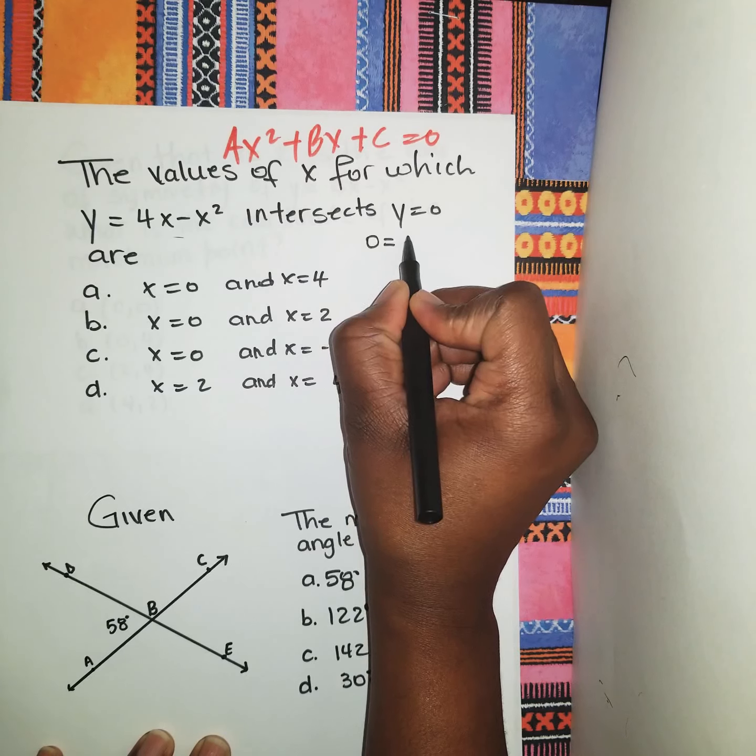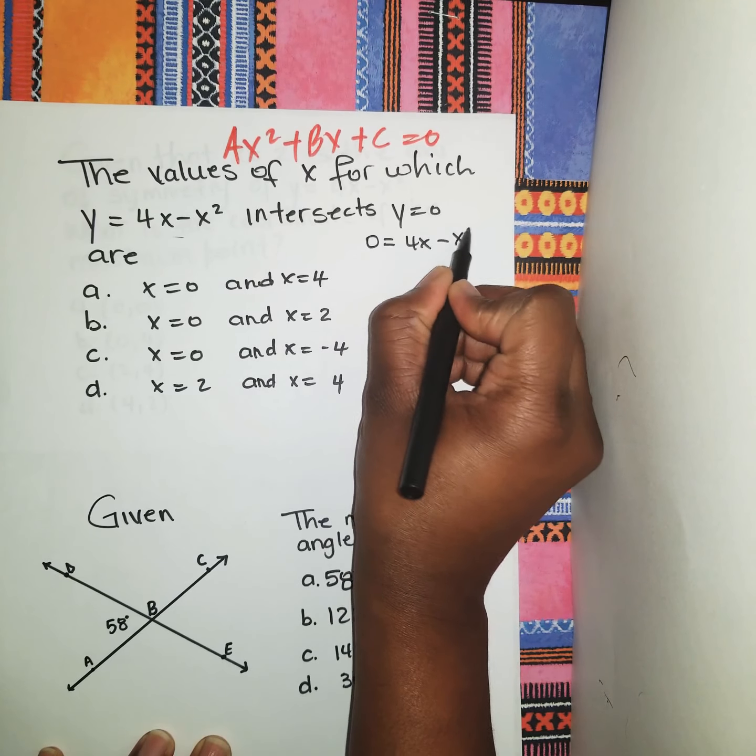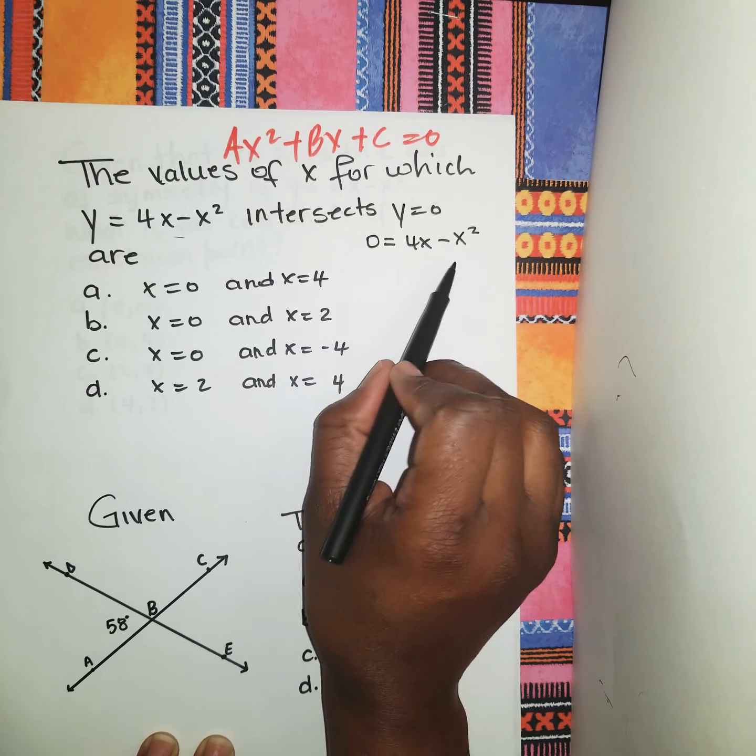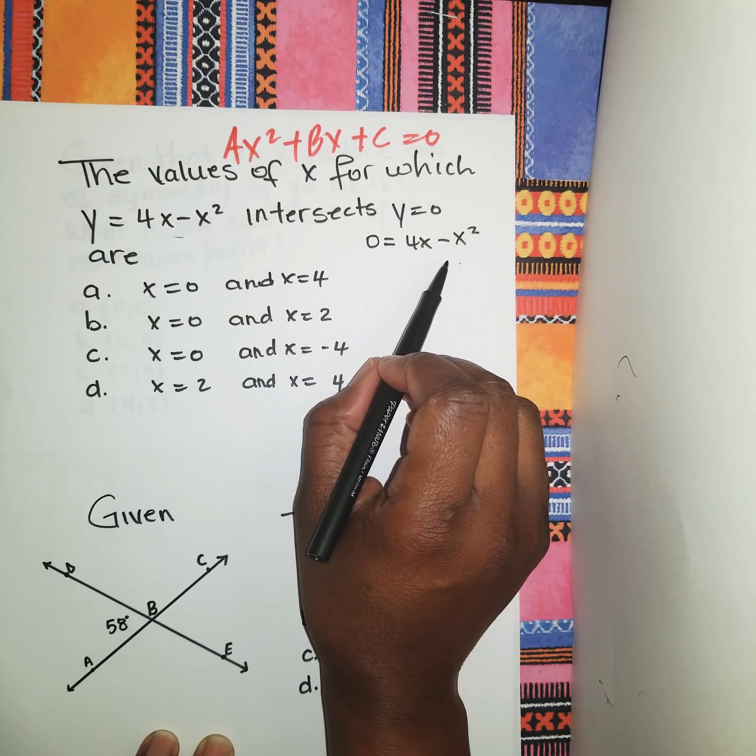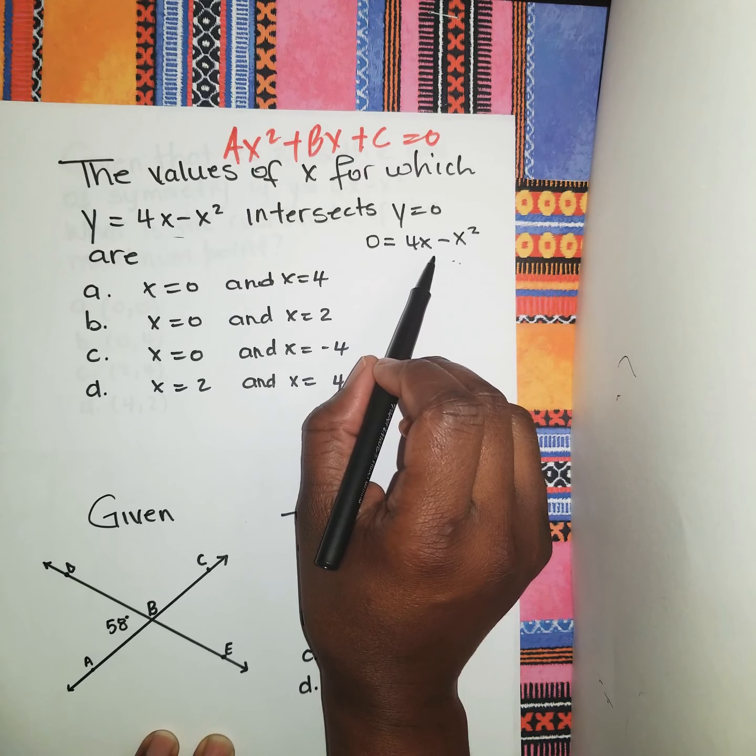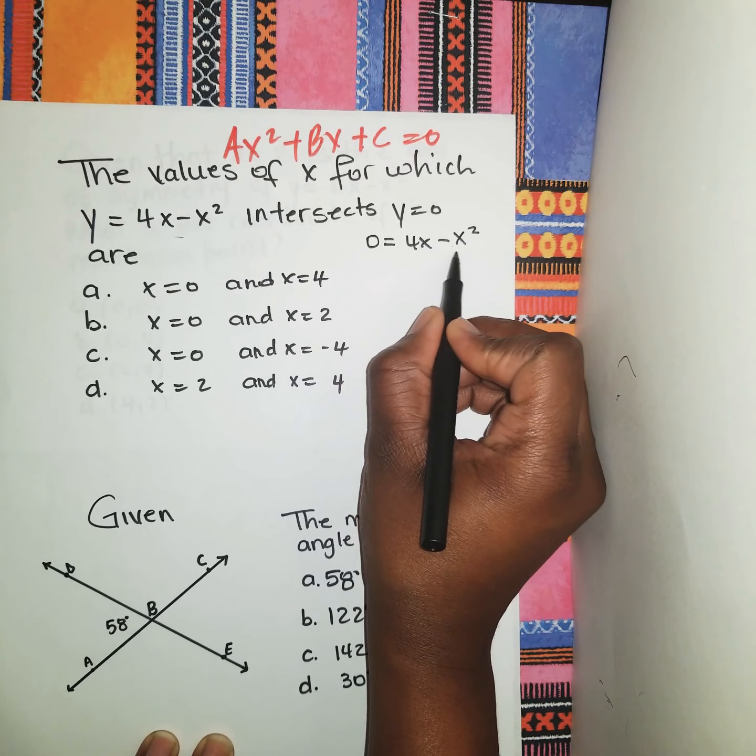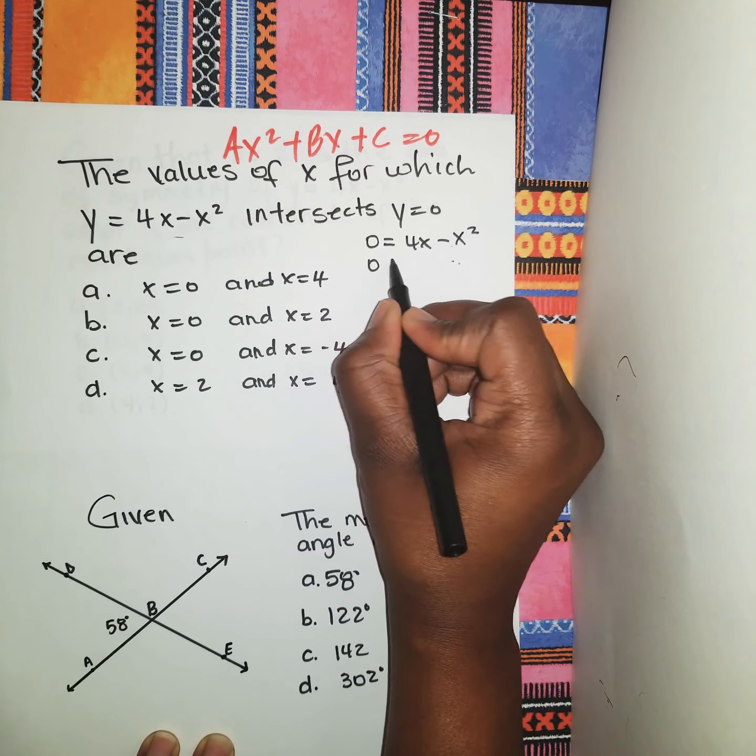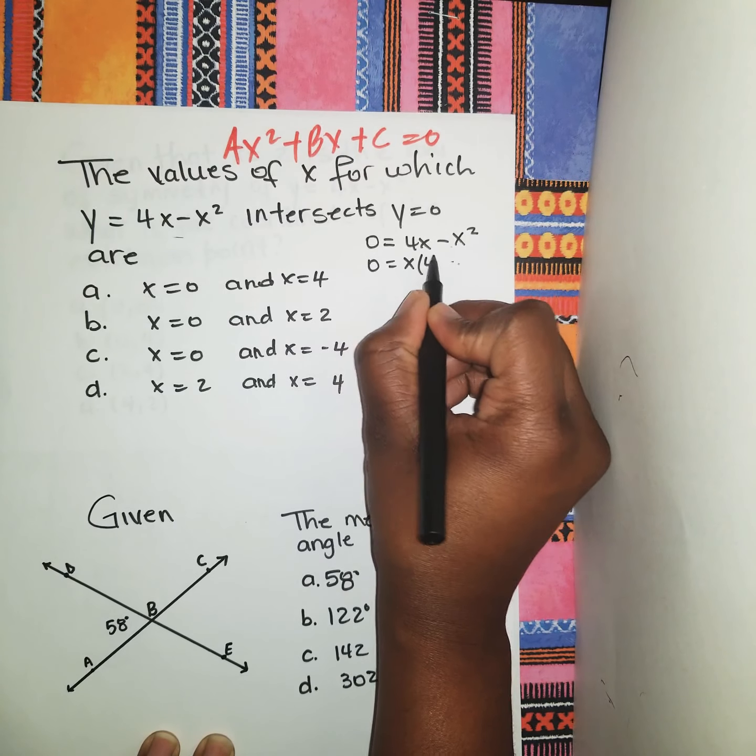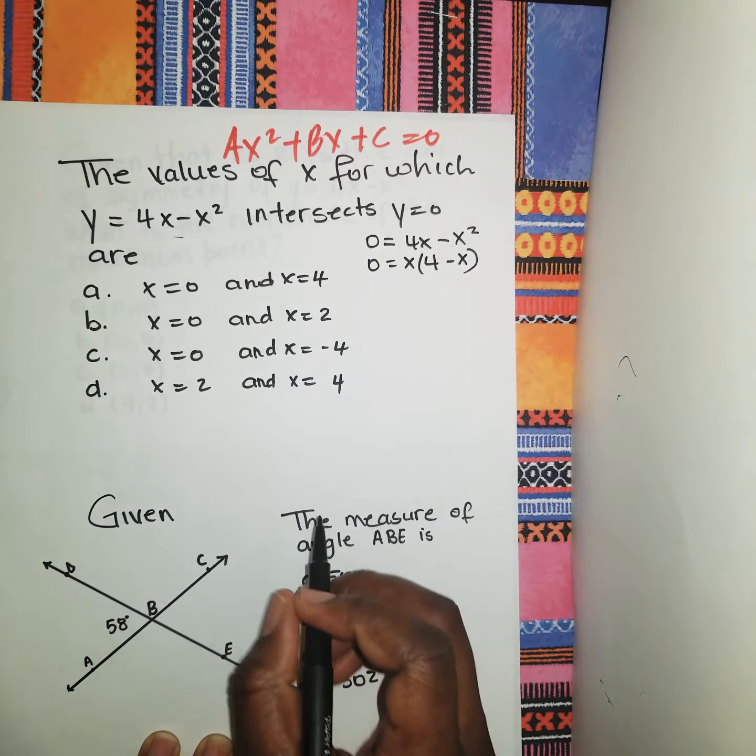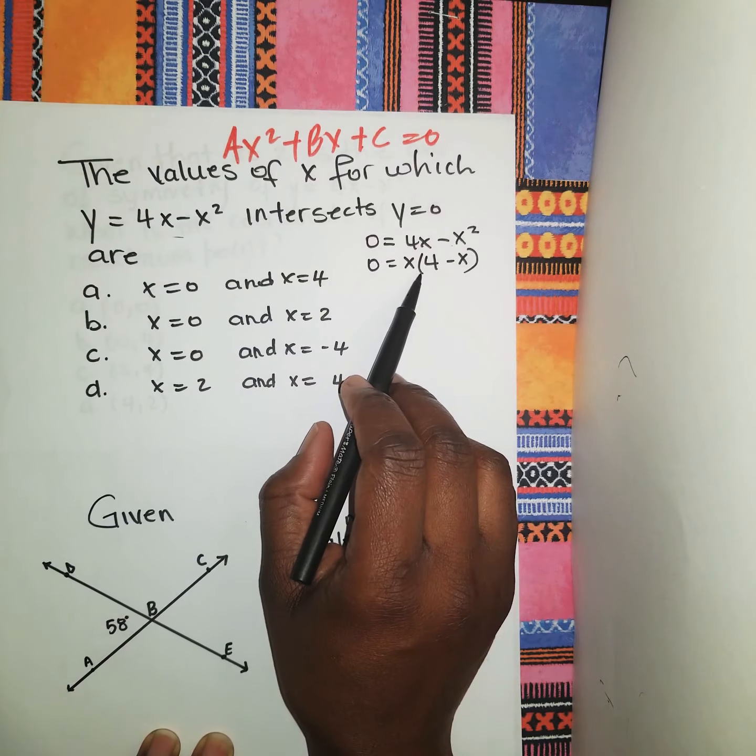What we need to do is equate this equation to 0. So 0 = 4x - x². From here, we need to solve for x, but we cannot solve as is. So we're going to have to factorize by taking what's common between the two terms given.